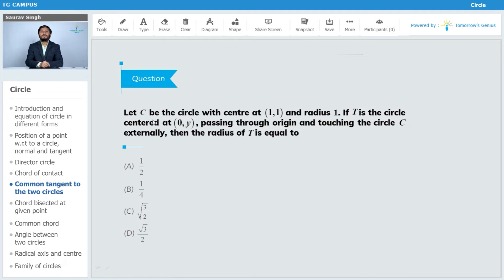Now the question here is: Let C be the center of a circle at 1 comma minus 1 and radius 1. If T is the center of a circle centered at 0 comma y and passing through the origin and touches the circle at C externally, then find the radius of T. So there is a circle given at 1 comma 1, its radius is 1. Now it will touch the x-axis as well as the y-axis. This is 1, so this is 1.